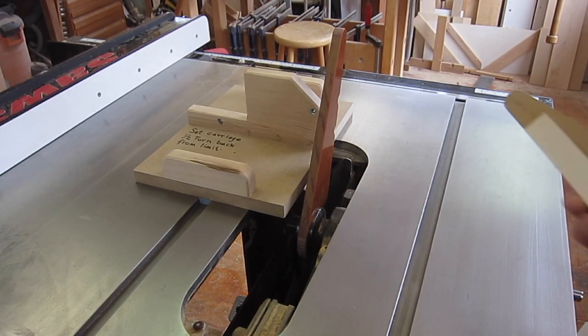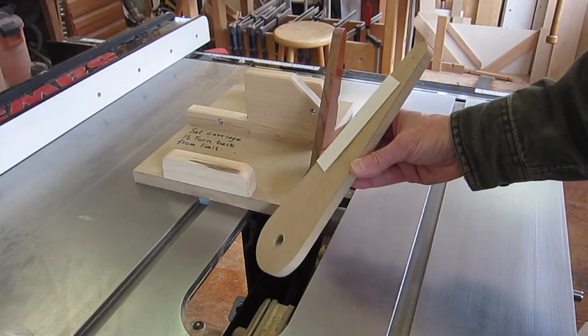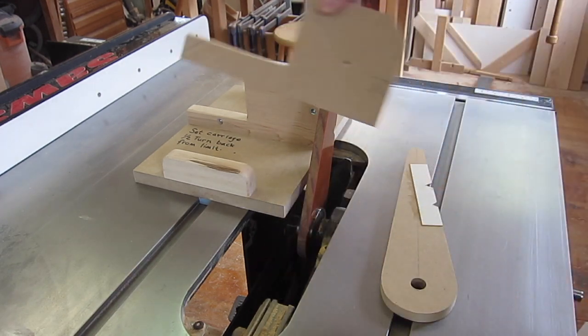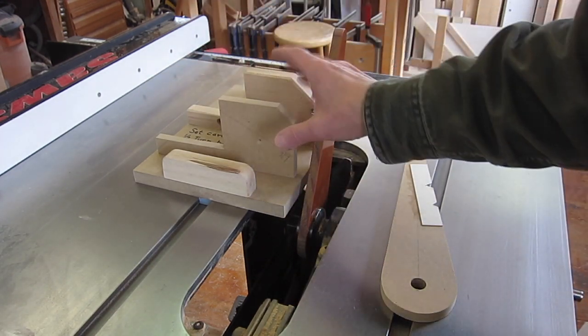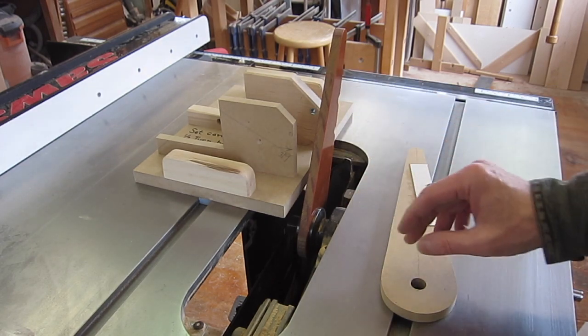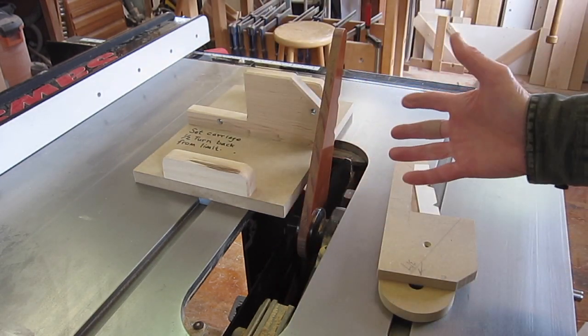The way I figured out the dimensions for these jigs is I made prototypes out of MDF, and the same here, and held the dial gauge in place, and then just kept cutting and fitting until I got it right. And you'll need to do that because every saw is going to be different.